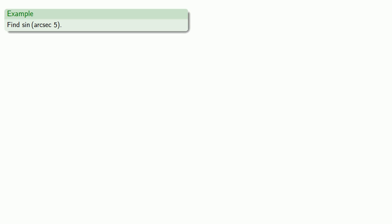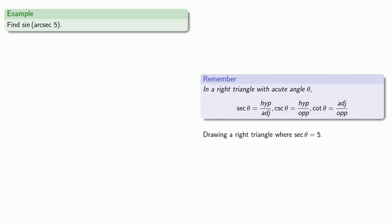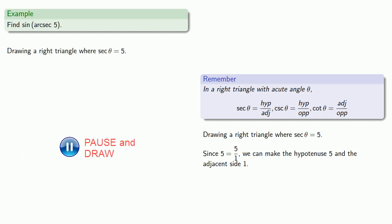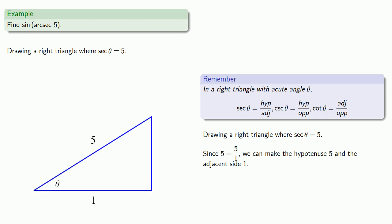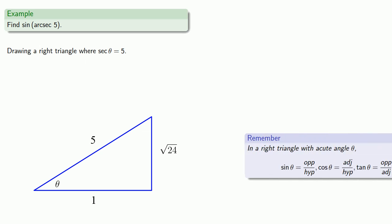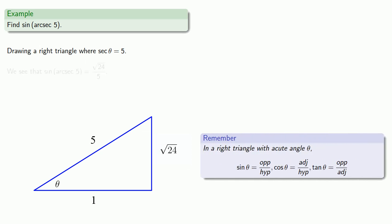How about the sine of the arc secant of 5? Let's draw a right triangle where secant of theta is equal to 5. It's helpful to remember that secant is hypotenuse over adjacent. Since 5 is 5 divided by 1, we can make the hypotenuse 5 and the adjacent side 1. Drawing our triangle, we have two sides of a right triangle so we can find the third side. We want the sine, which is going to be the opposite, square root of 24, divided by the hypotenuse, 5.